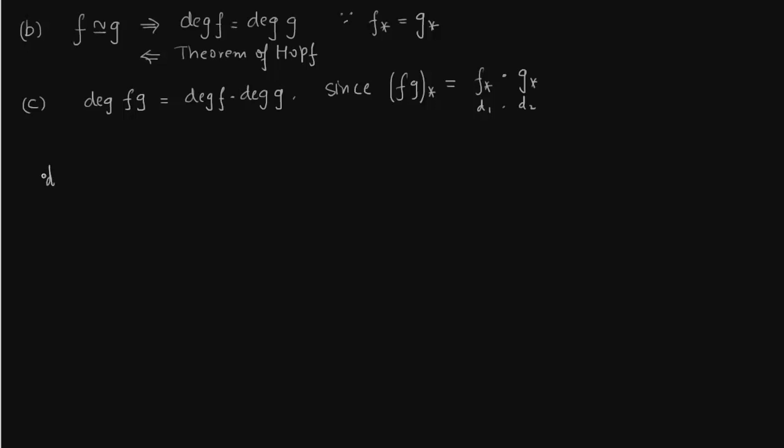So let us apply part c. So consider there is a map f which is not onto. Then the degree of this map is 0. So f is not onto then its degree is 0.